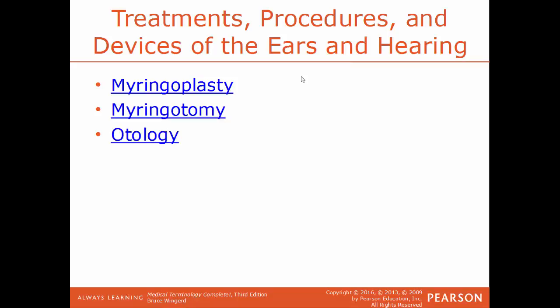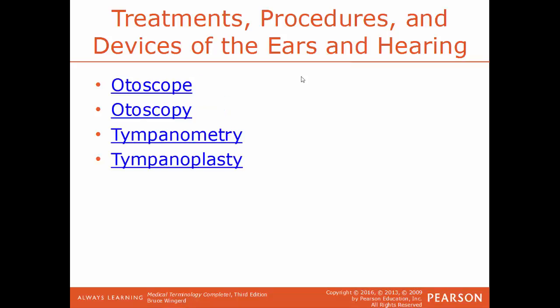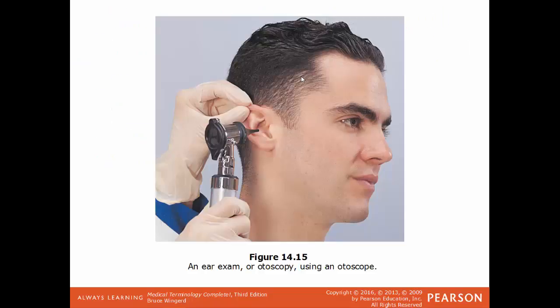Otology is the study of the anatomy and diseases of the ear. An otoscope is a tool used to visualize the inside of the ear, and the overall process of viewing inside the ear would be otoscopy. Tympanometry is a test that measures the function of the middle ear and also the mobility of the eardrum. Tympanoplasty would be the surgical repair of an eardrum — slightly different from myringoplasty. With myringoplasty you're only dealing with the eardrum itself without moving it out of place, but with tympanoplasty you are lifting it out of position to repair it. In this image we have someone using an otoscope to examine a person's ear.